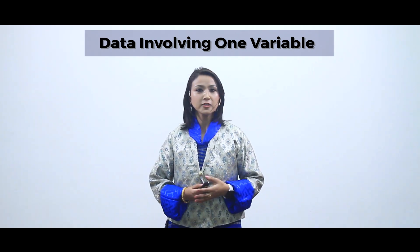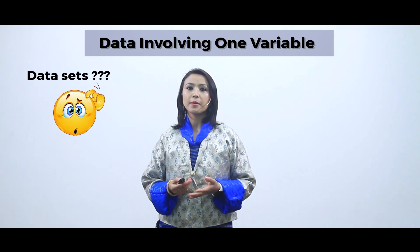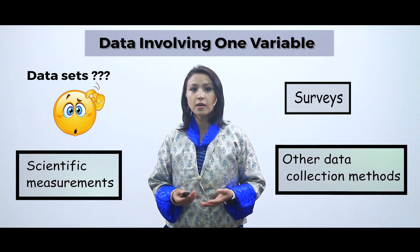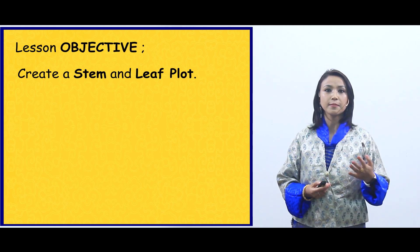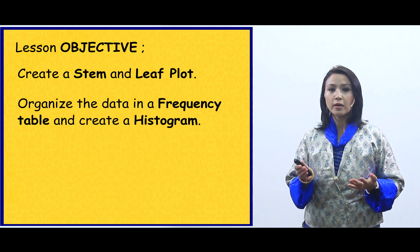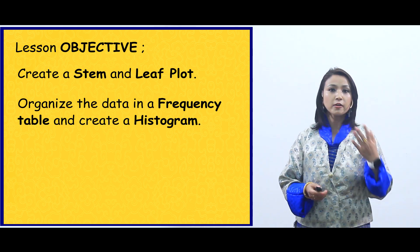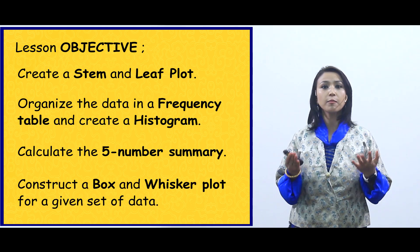Math often deals with data sets. Where do these data sets come from? These numbers may be the result of scientific measurements, surveys, or any other data collection methods. In mathematics, we use various methods to organize and understand these data sets. Today we'll focus on four important key concepts: creating a stem and leaf plot, organizing data into a frequency table and histogram, finding the five-number summary, and constructing a box and whisker plot.